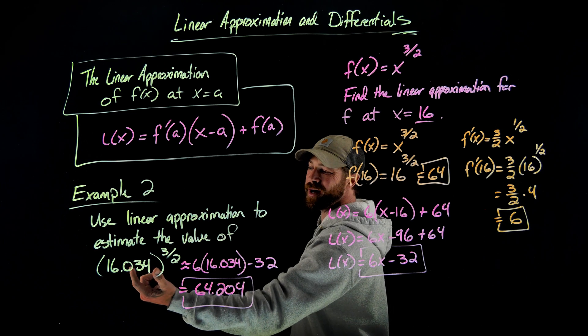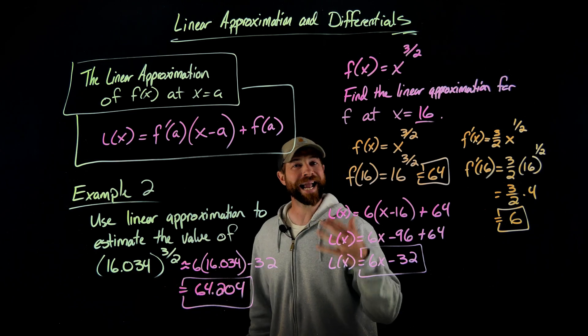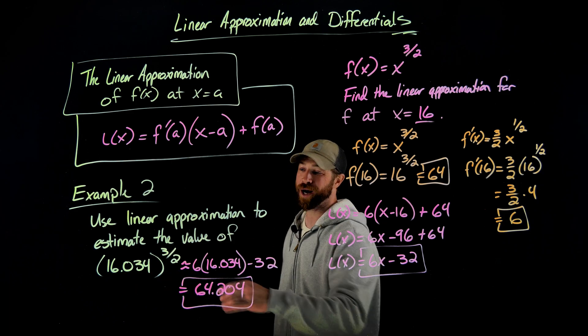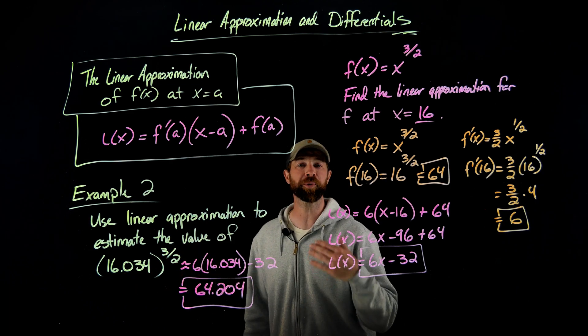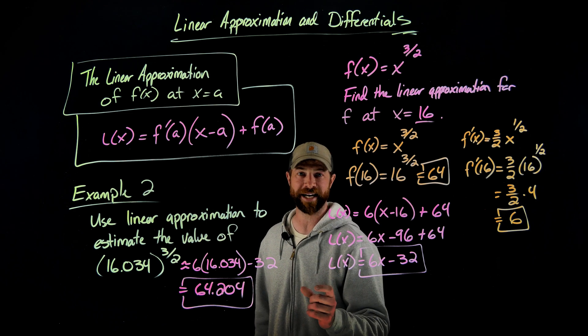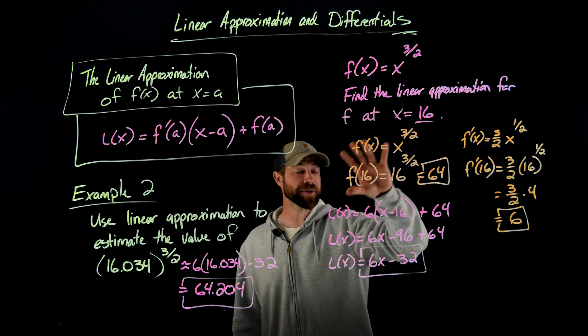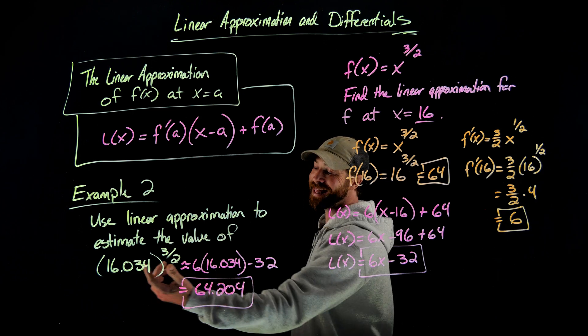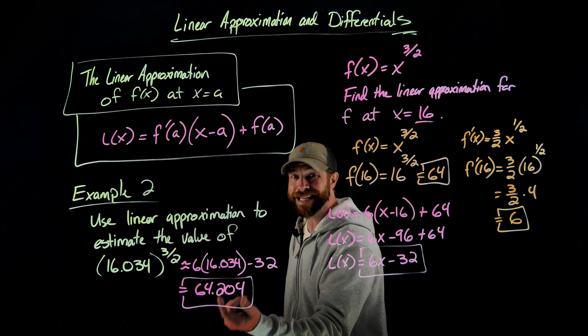which by the way, by hand, if you didn't have technology, to take a number that's not a nice perfect square and raise it to three halves is incredibly hard to get any kind of accuracy. Though in this case, through some simple linear approximation, we were able to estimate this value up to three decimal places.